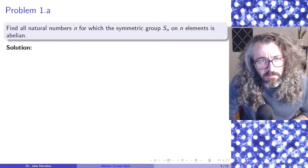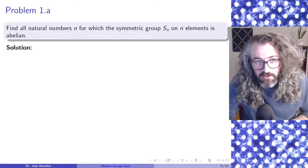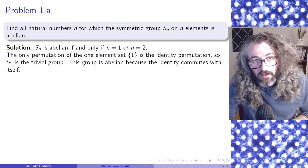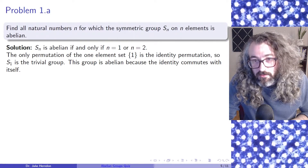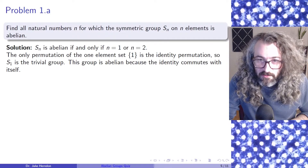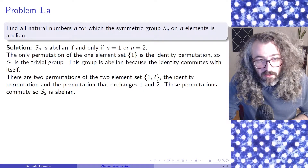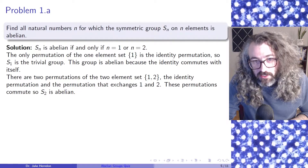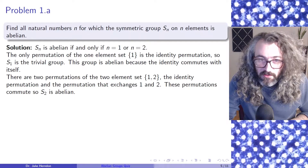Problem 1, Part A: Find all natural numbers n for which the symmetric group on n elements is abelian. The solution is that the symmetric group is abelian if and only if n equals 1 or n equals 2. The only permutation of the one-element set is the identity permutation, so the symmetry group on one element is the trivial group, and this group is abelian because the identity commutes with itself. For the symmetry group on two elements, there are only two permutations — the identity permutation and the permutation that exchanges 1 and 2 — and these permutations commute, so the symmetry group on two elements is abelian.